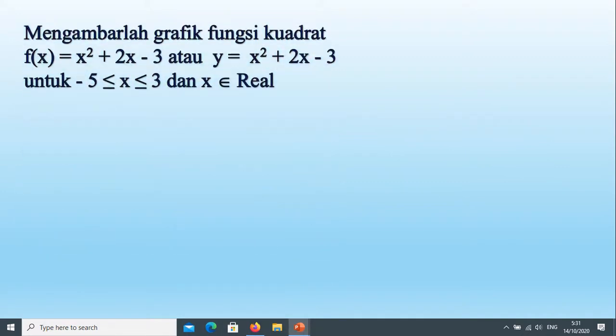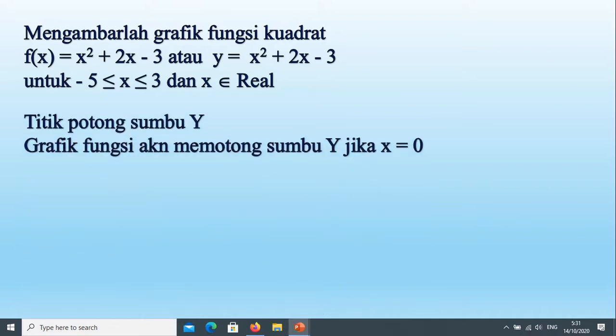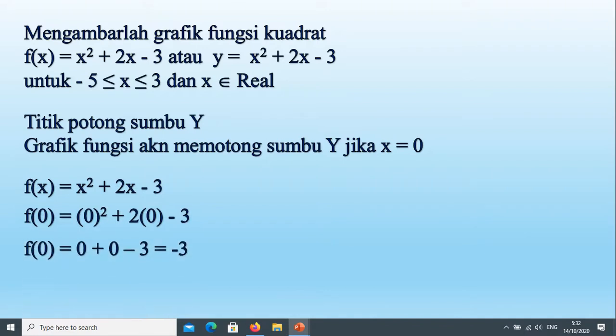Ya saya ambil contoh sekarang ini masih sama seperti kemarin contohnya untuk hanya membandingkan saja ya. Sekarang coba kita lihat, sekarang kita cari titik potong sumbu y. Titik potong sumbu y, grafik itu akan memotong sumbu y jadi jika nilai x adalah 0 maka kita masukkan 0 pada fungsi tersebut ya. f(0) berarti 0 kuadrat ditambah 2 kali 0 dikurangi 3, jadi nilainya adalah negatif 3. Jadi titik potongnya yaitu (0, -3).